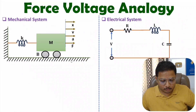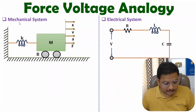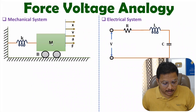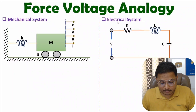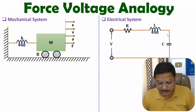Here you can observe we have a mechanical system. In this mechanical system we have a spring with constant k, a mass with value m, and a damper with damping constant b. We apply force f, and because of this force, acceleration is a, velocity is v, and displacement is x. Over here we have an electrical system connected to voltage v with R, L, C elements in series.